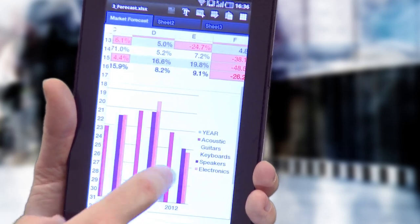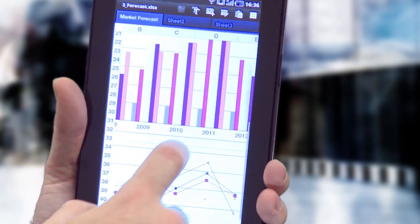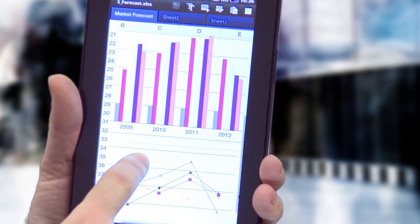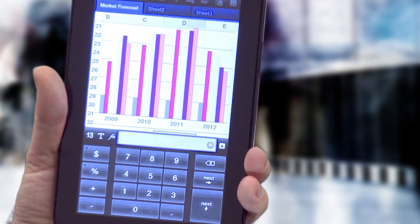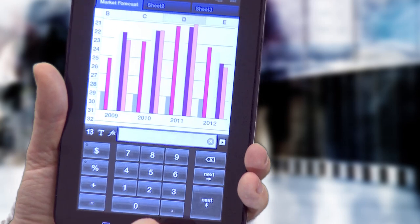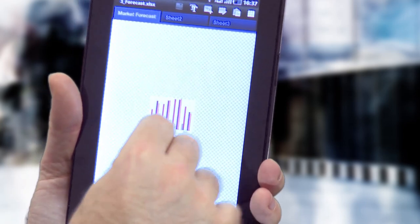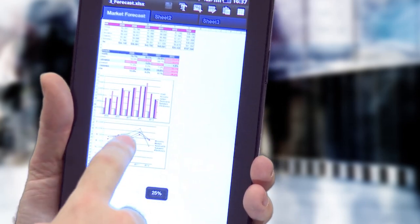If we have a look at an Excel spreadsheet, for example, you can see that you can scroll around and not only just view it, but you can move into the individual cells and edit them.